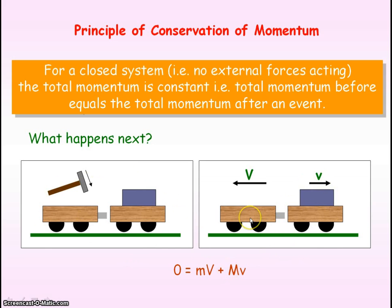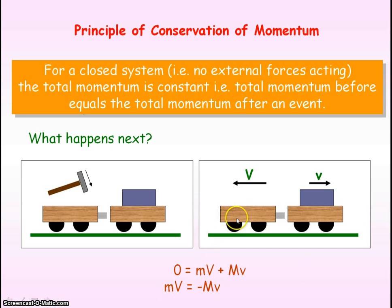The momentum of the first trolley, which has the smaller mass, will be m times v. And the momentum of the trolley with the larger mass is represented by capital M times little v. If we rearrange, the momentum of the first trolley will be equal and opposite to the momentum of the second trolley. But for them to have equal and opposite momentum, the trolley with the smaller mass must have a larger velocity, and the trolley with the larger mass must have a smaller velocity.